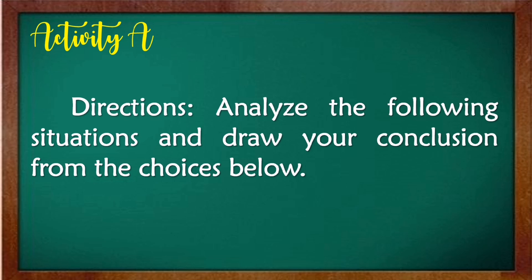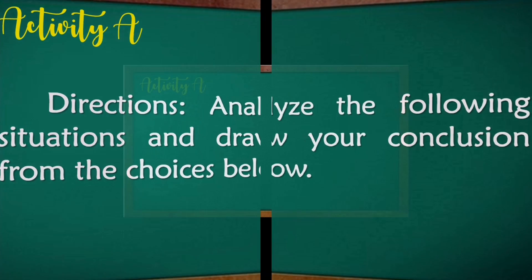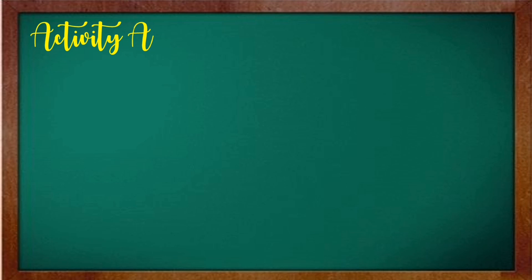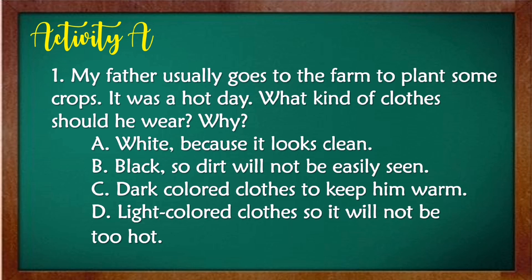Directions: Analyze the following situations and draw your conclusion from the choices below. Activity A, Number 1: My father usually goes to the farm to plant some crops. It was a hot day. What kind of clothes should he wear, and why? Read the choices and write your answer in your notebook. The answer is letter D — light colored clothes, so it will not be too hot.